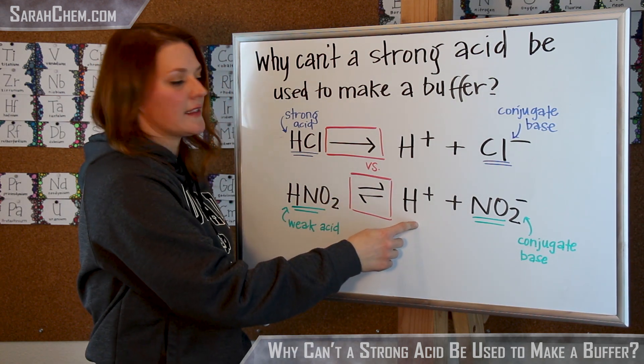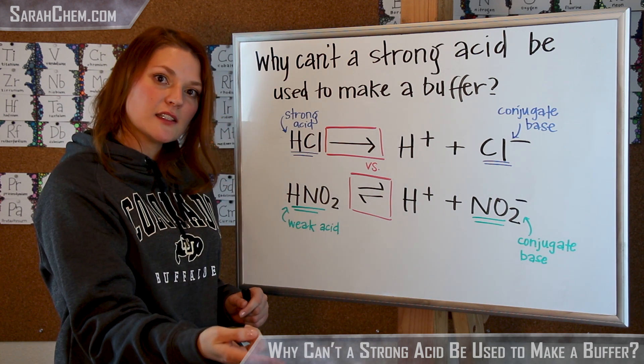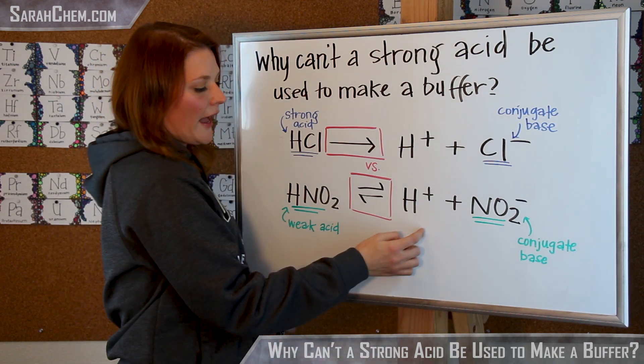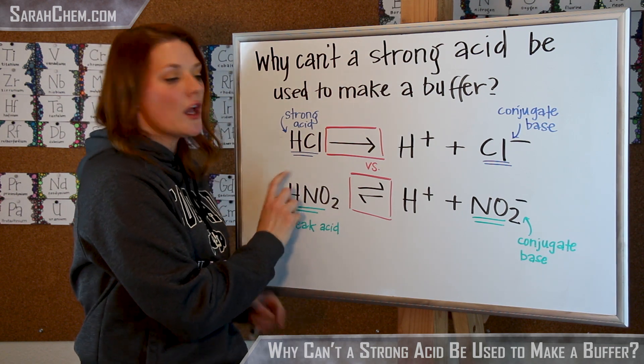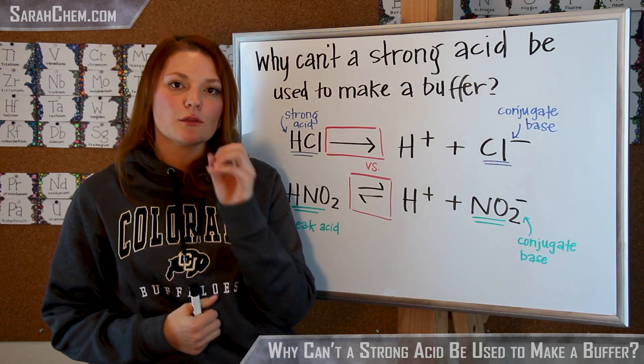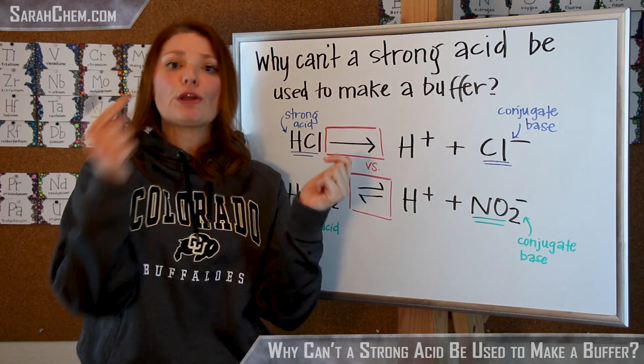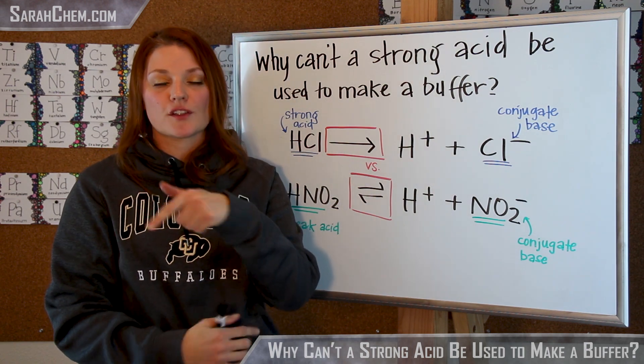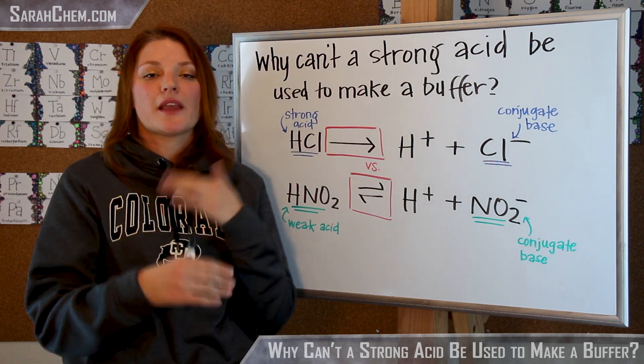If I were to add an acid to solution though, we see that this is able to react with an acid and move backwards. So with our weak acid, because it reaches an equilibrium where you can move forward and you can move backwards, we can leverage that to be able to make a buffer.